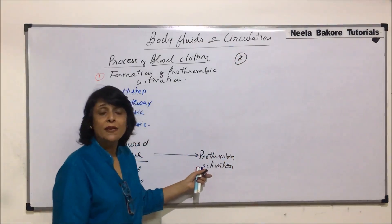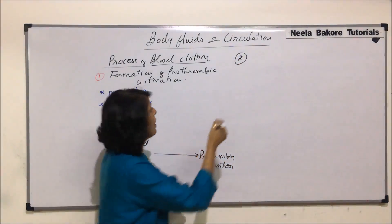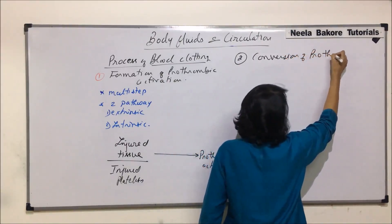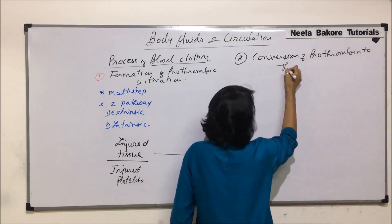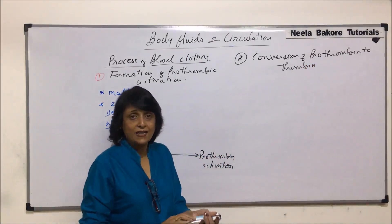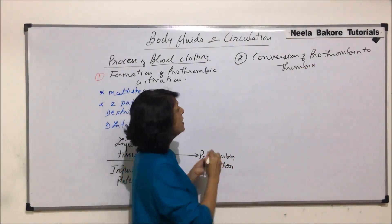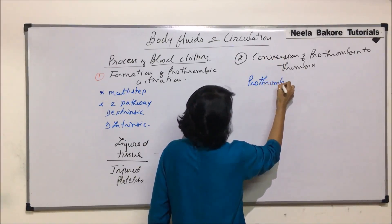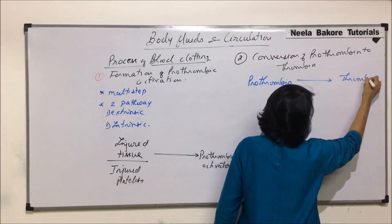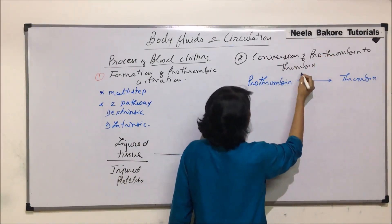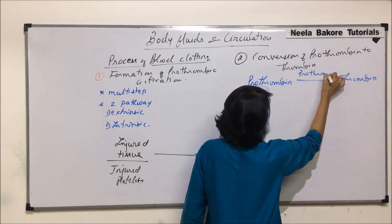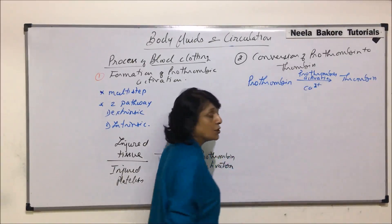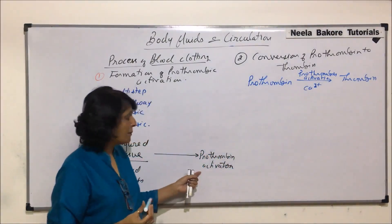The second step is that this prothrombin activator is going to convert prothrombin into thrombin — that is the conversion of prothrombin to thrombin. As we are writing in short steps, the reaction is: prothrombin is converted into thrombin. The prothrombin activator formed in step one is required here, and calcium ions are also essential for this reaction to take place.